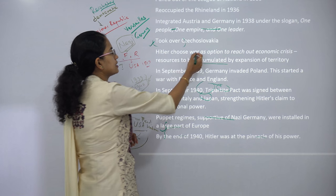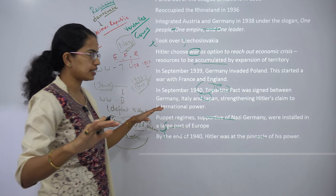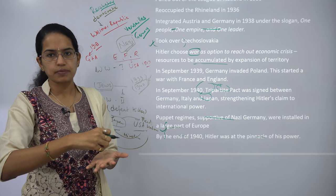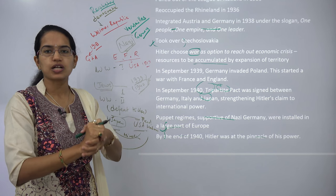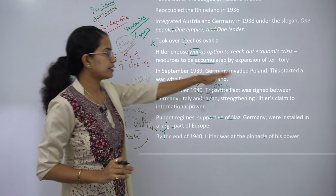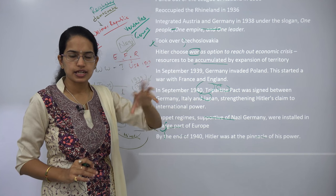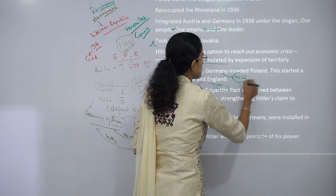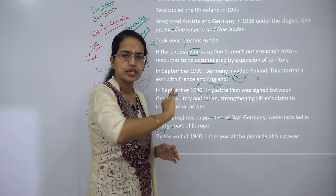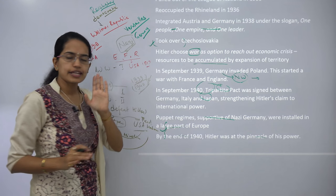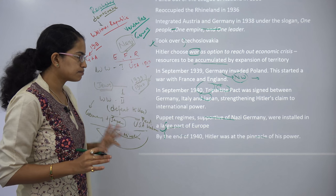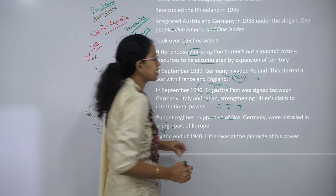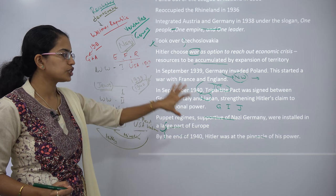Hitler focused on war and his sole idea was to expand his territory. He invaded parts of Poland, which became the place of experimentation where various countries were engaged in war. Germany invaded Poland and started war with France and England from Poland. Slowly North-West Poland came under Germany, and many people and Jews were evacuated from this part. In 1940 a Tripartite Pact was signed between Germany, Italy and Japan, strengthening Germany's power internationally.